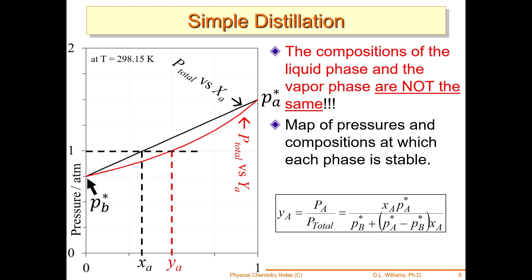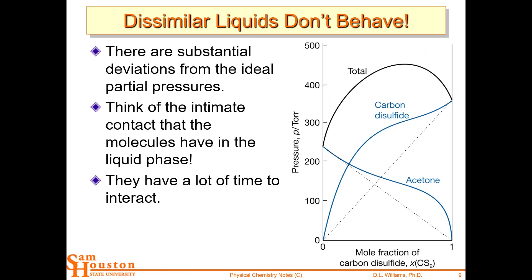This is simple distillation — using differences in vapor pressure. Now, dissimilar liquids don't behave ideally. Carbon disulfide and acetone mixed together is a good example. We've got Raoult's Law lines here, but look how non-ideal these are. These are the experimental lines, and Raoult's Law plus Dalton's Law would give us this line right here. That's pretty crazy.